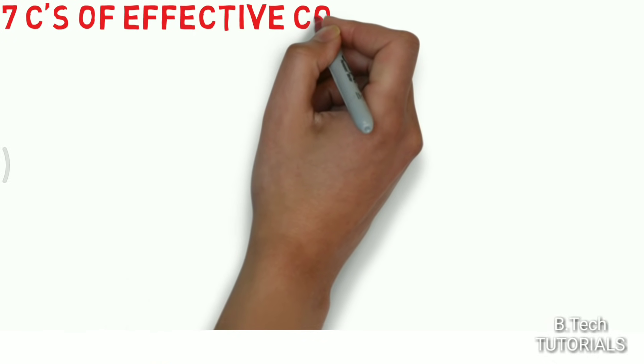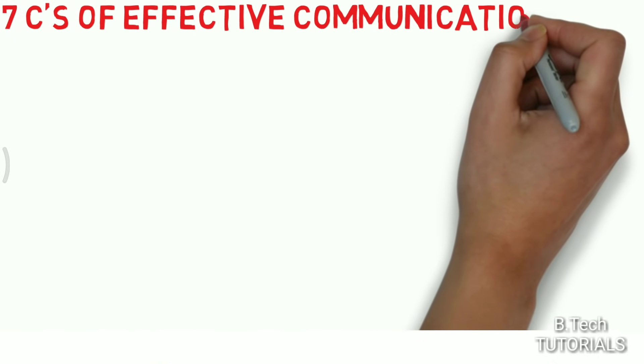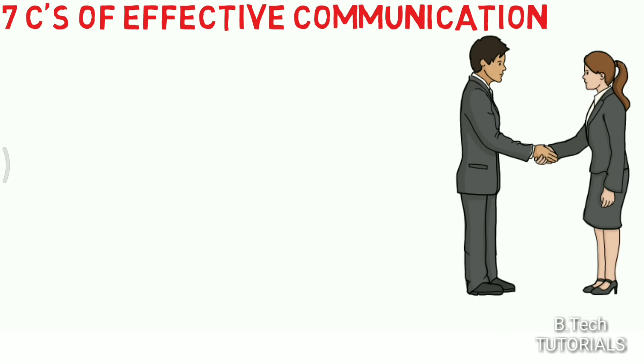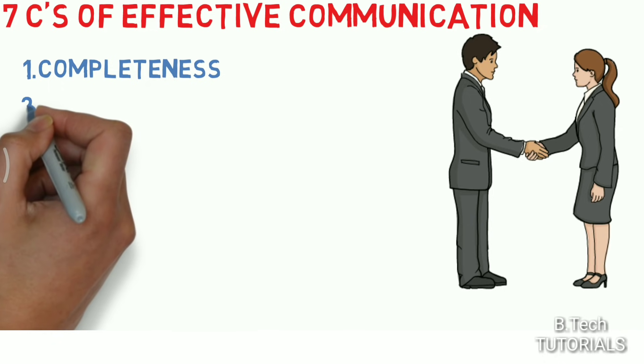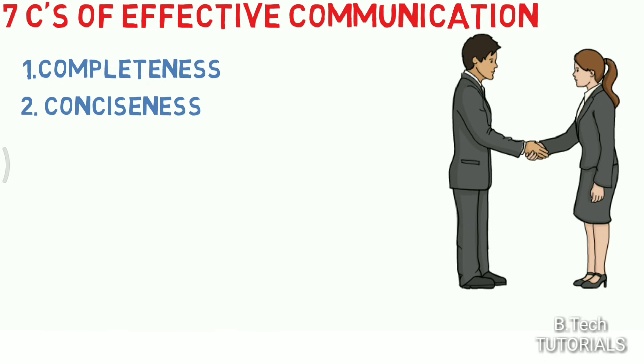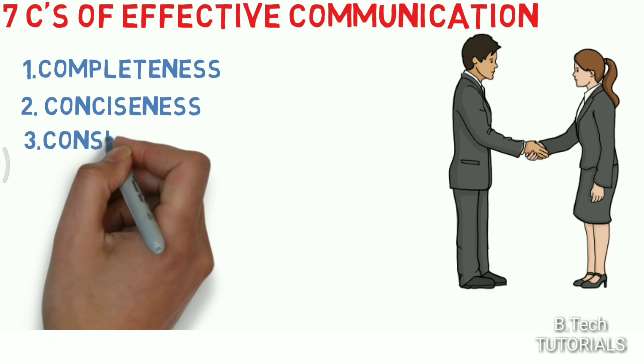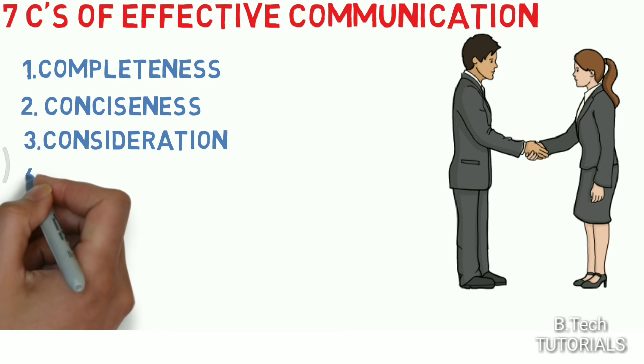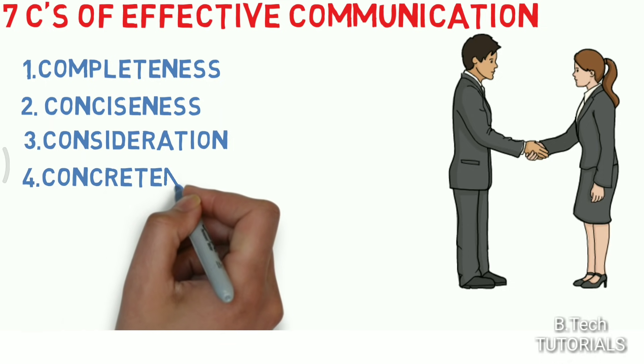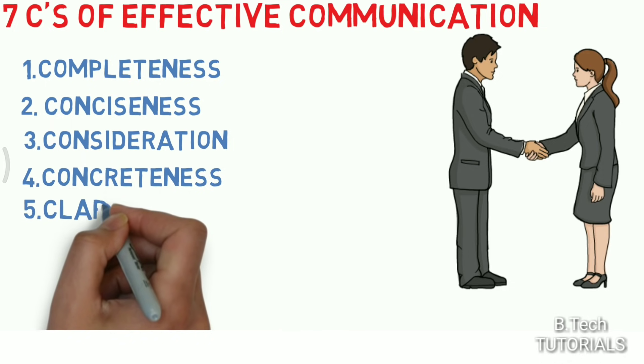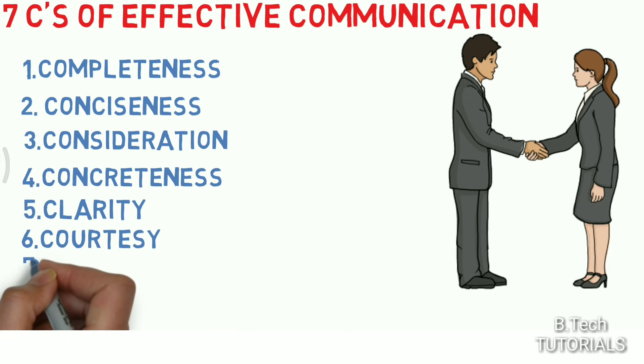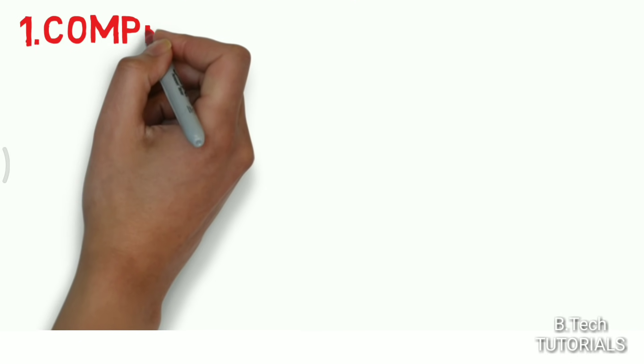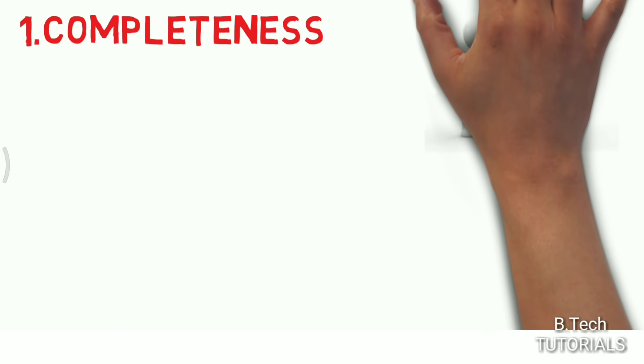Hi friends, today we are discussing a most important topic in communication: the seven C's of effective communication. Let's see. First is completeness, second is conciseness, third is consideration, fourth is concreteness, fifth is clarity, sixth is courtesy, and last but not least is correctness.